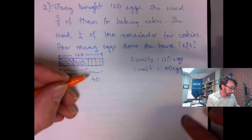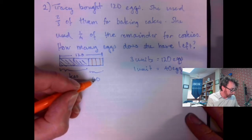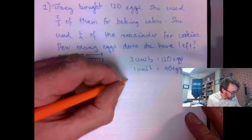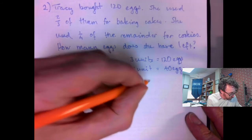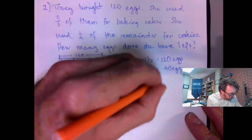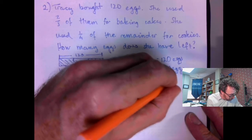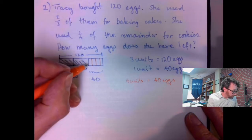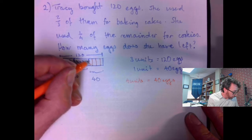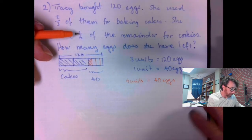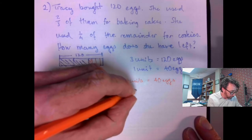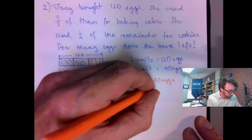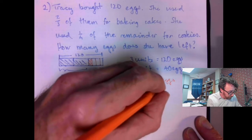In this second division here, I have four units equaling 40 eggs. She uses another one-quarter of the remaining eggs, so that leaves us with three-quarters left. I need to know how much three units is. That's 30 eggs.